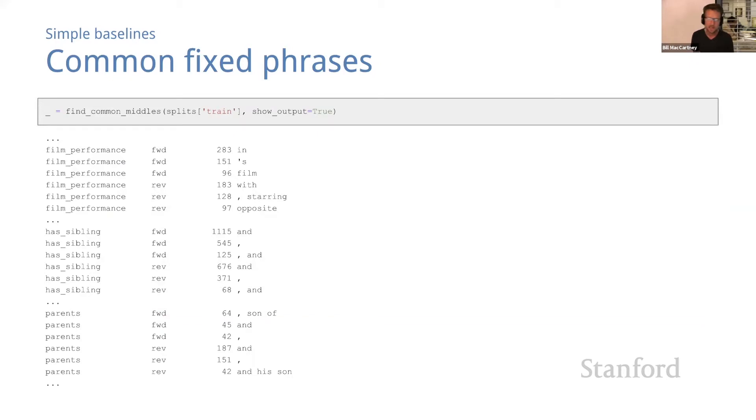If we run that code, here's what we get. I'm only going to show results for three of the relations here, not all 16. Even from this sample there's a few things that jump out. First, some of the most frequent middles are really natural and intuitive. For example, 'comma starring' indicates a reverse film performance relation. So that would be one where the film comes first and the actor comes second—Star Wars, comma, starring Mark Hamill. Similarly, 'comma son of' indicates a forward parents relation where the son comes first, the child comes first, and the parent comes second. So those are extremely intuitive and it's reassuring to see them near the top of the list of most common middles.